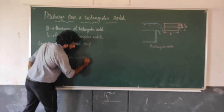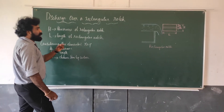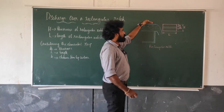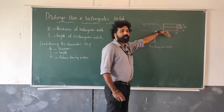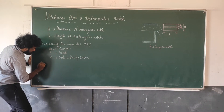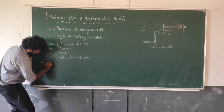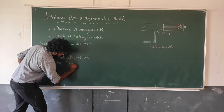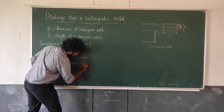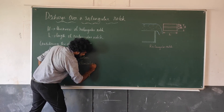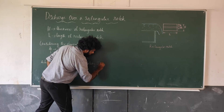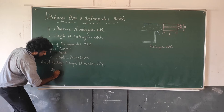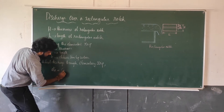Considering the elemental strip at distance h from the top: L is the length of the rectangular notch. The area of the strip is L × dh. H is the distance from the top surface. This elementary strip of thickness dh and length L is used to find the discharge.